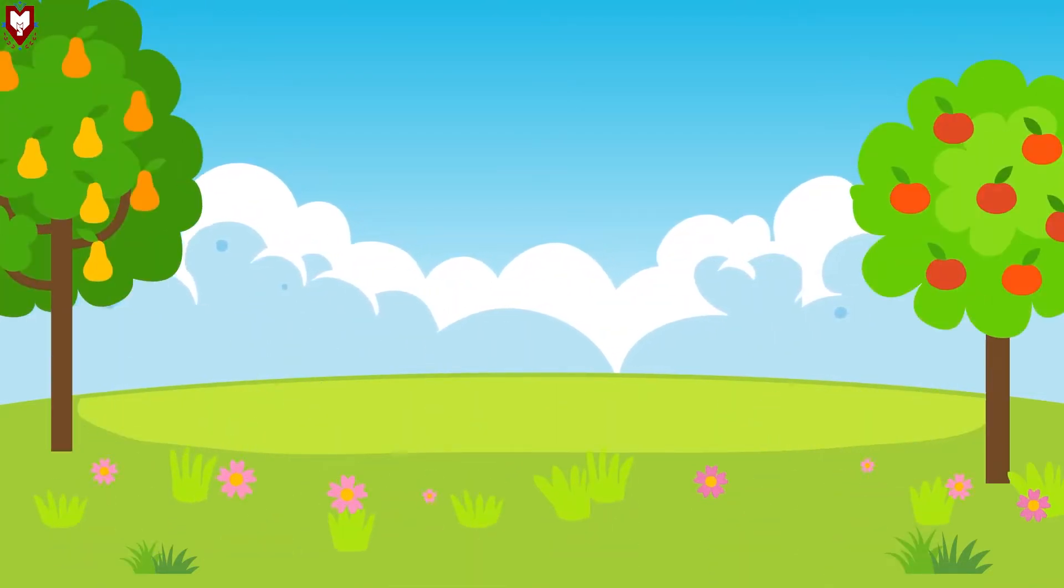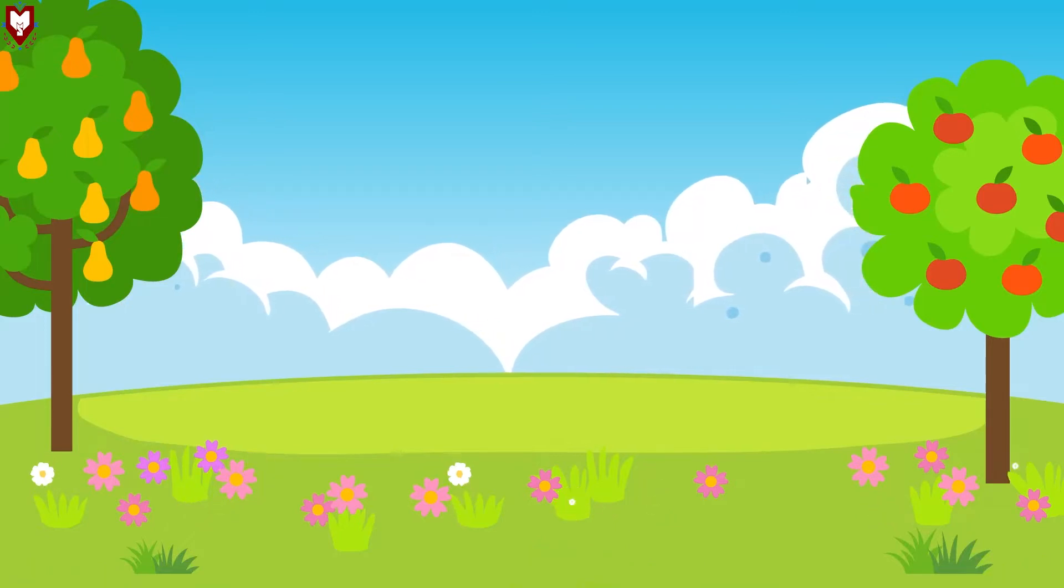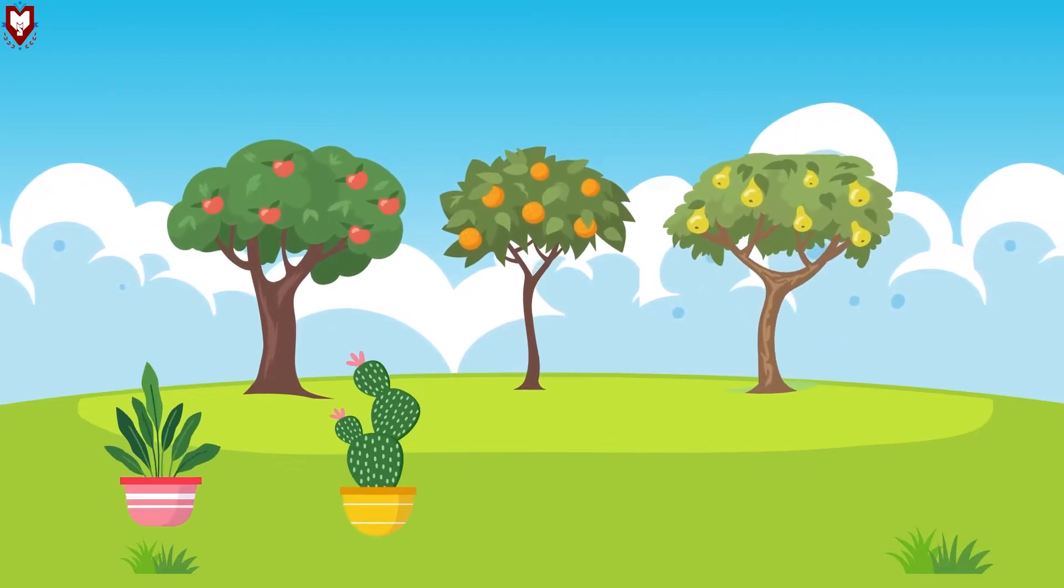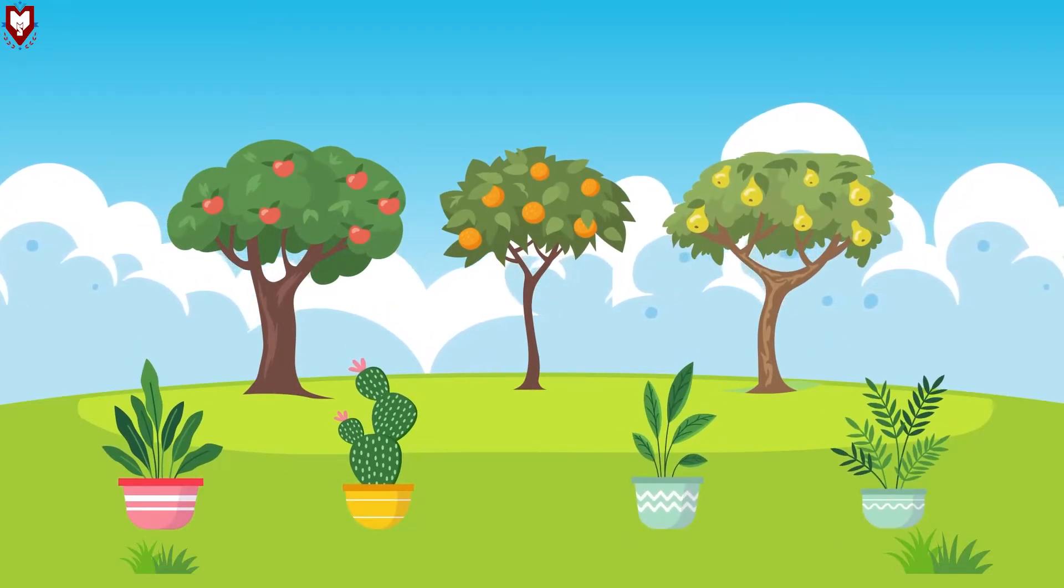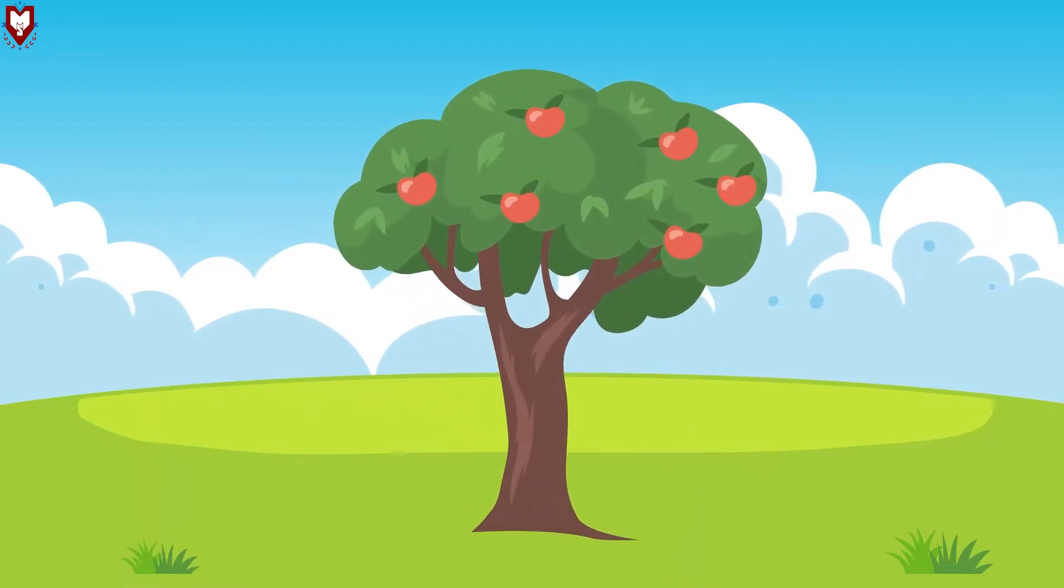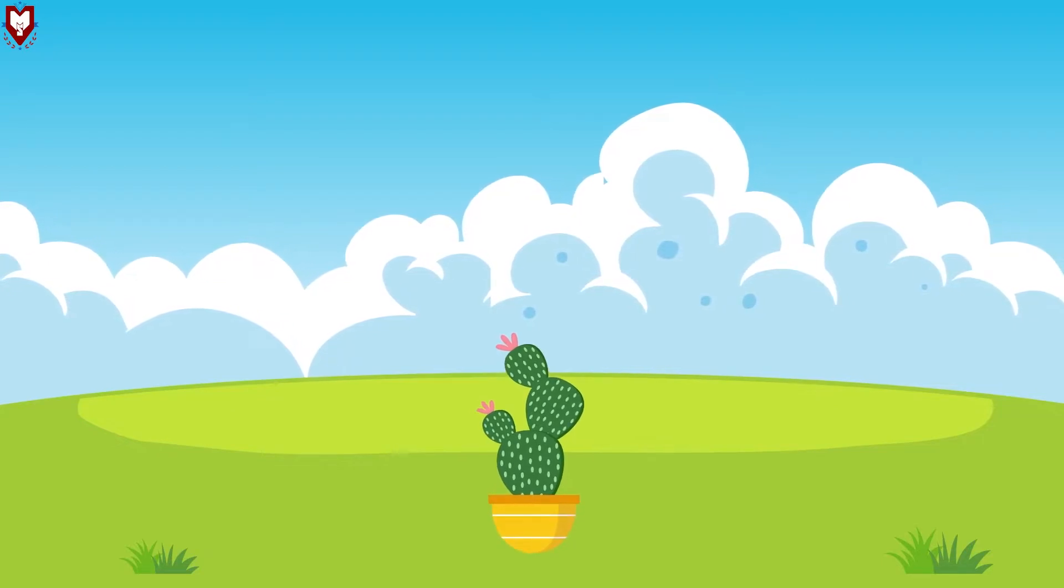Now tell me, have you ever seen plants in your garden? Oh come on, we all have seen plants. They are everywhere. Plants are of different shapes and sizes. Some are tall and big and some are small and short.